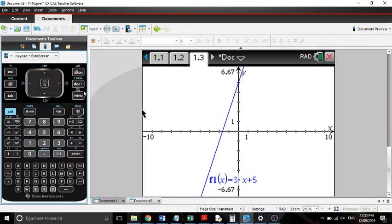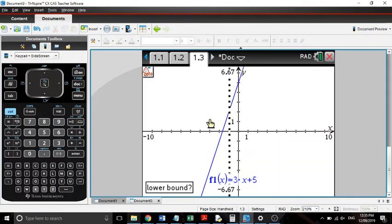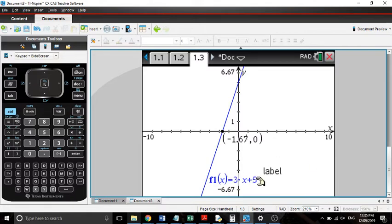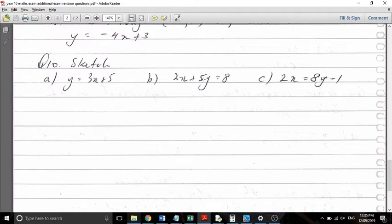To find intercepts, I'll say... Menu, Analyze Graph, 0 for an x-intercept. And it tells me where it happens. So that again. I press tab to open this line. I type in my equation. 3x plus 5. And I press enter. It draws the graph for me. And then I go menu, Analyze, 0 to find the x-intercept. And we have that. How do I find the y-intercept? What do I do? We let x equal 0. So if we let x equal 0, what's our y-intercept going to be? 5. So that's what it is there. We have it there at 5.